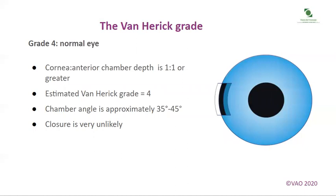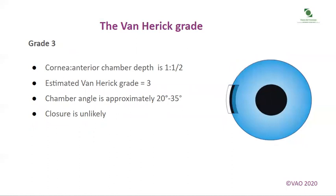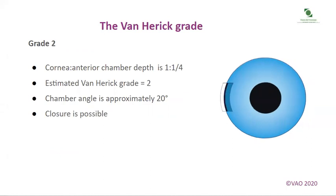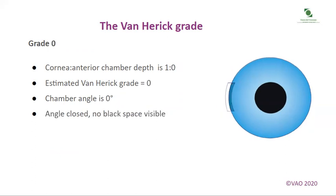Grade 4 is the normal eye: the cornea to anterior chamber depth ratio is 1 to 1 or greater; the chamber angle is approximately 35 to 45 degrees and closure is very unlikely. Grade 3: the ratio is 1 to 1/2; the chamber angle is approximately 20 to 35 degrees, but closure is still unlikely. Grade 2: ratio is 1 to 1/4; chamber angle is approximately 20 degrees and closure is now possible. By the time we get to Grade 0, the ratio is 1 to 0, the chamber angle is 0, the angle is technically closed and there is no black space visible.